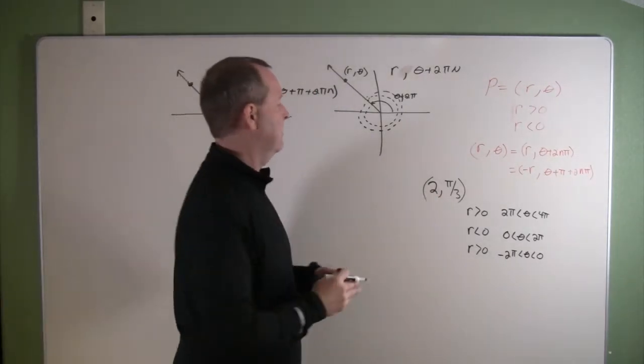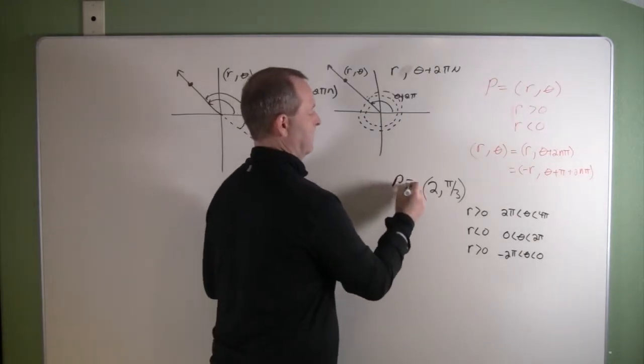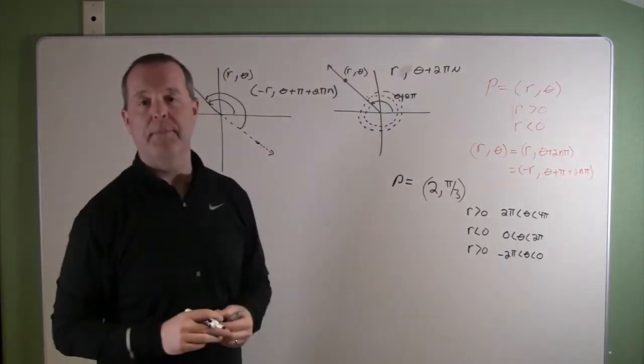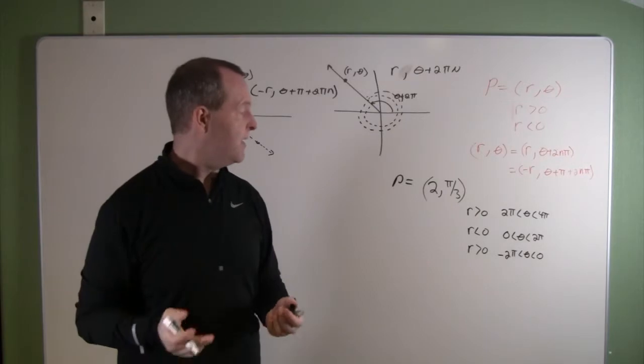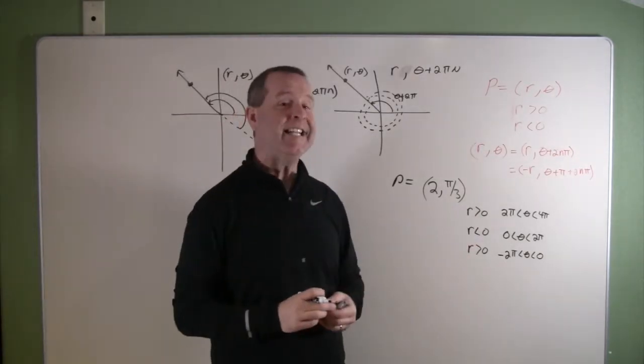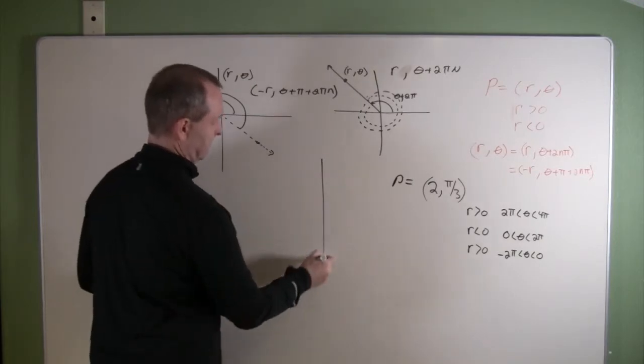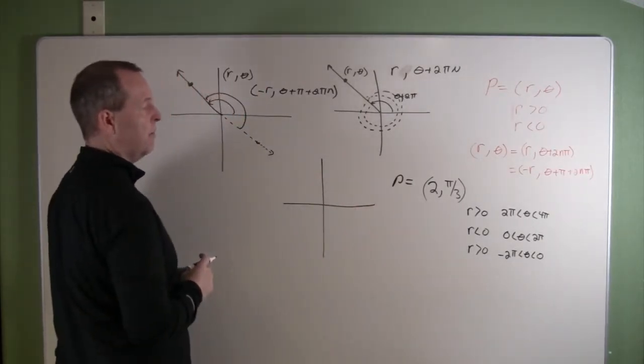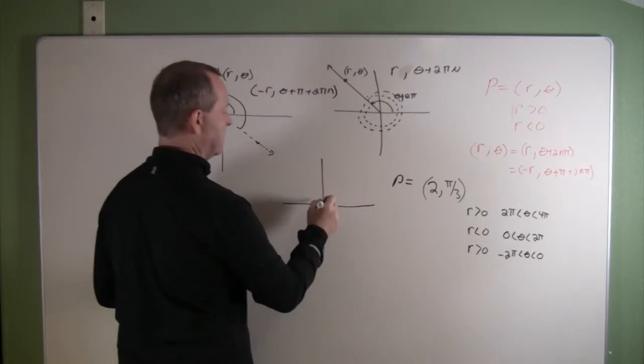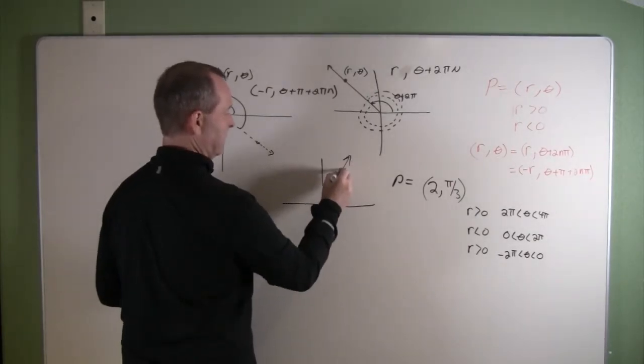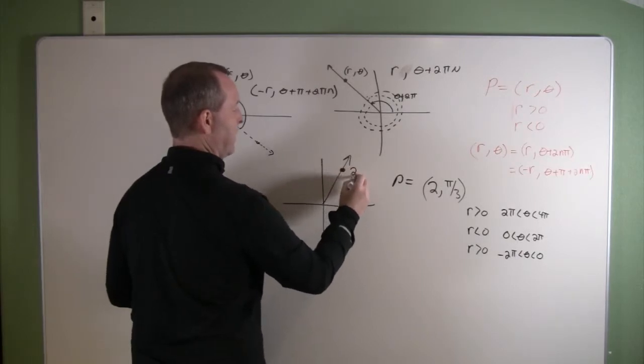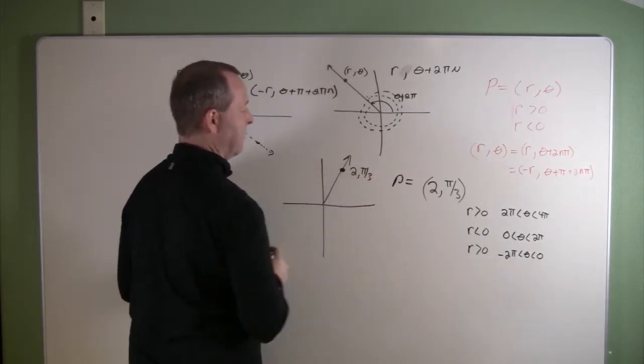So let's get an example of what this looks like. Here I have the point equals 2 and π/3, and I want to represent that giving these three different conditions. So I have π/3, some point right there, that point 2, π/3.